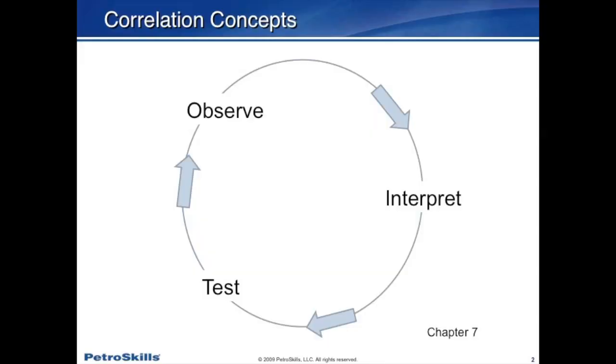Part 2: we're going to talk about some interpretation techniques and how you interpret seismic data. It's really a concept that it's an iterative loop. We start out with an observation — we look at the data, determine what we can see. Is the data good or bad? What do we see in the data? Then we make an interpretation — we get our pencils out if we're dealing with paper, or we use our mouse on the workstation and we make an interpretation.